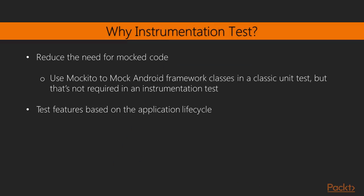So why do we want to do instrumentation tests? One major reason is we want to reduce the need for mocked code. We can use Mockito to mock out some Android framework classes like Parcelable and Context, but we really shouldn't spend a lot of time mocking classes that we did not write. With an instrumentation test, it's essentially a unit test, but it also gives us Android classes like Context and access to an activity. We can fire Intents into an activity — an instrumentation test uses the unit test framework but gives us these Android tools as well.